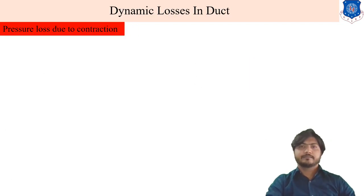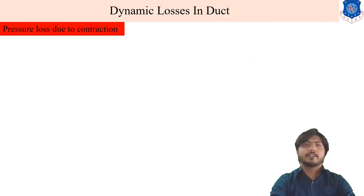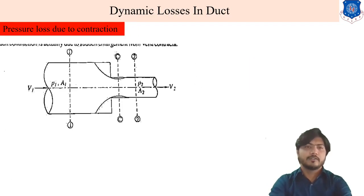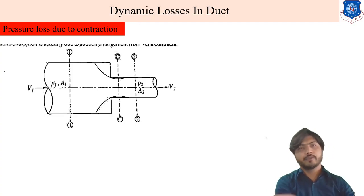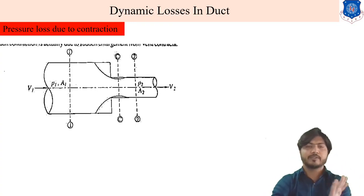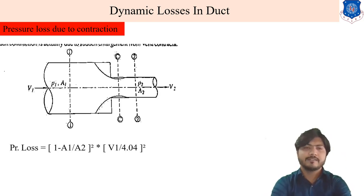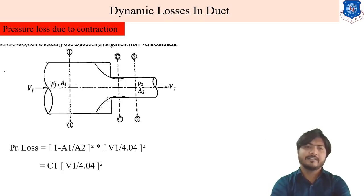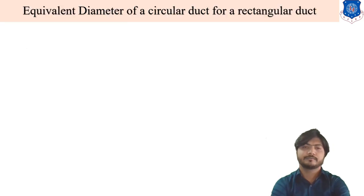Pressure loss due to contraction is the opposite of enlargement — the area suddenly decreases. The formula is the same form: Pf = (1 − A1/A2)² · V1²/(2g), with a coefficient C2 also defined similarly. The conditions are just reversed compared to enlargement.